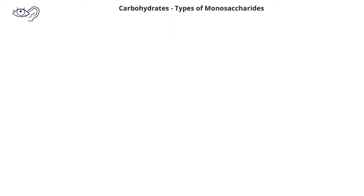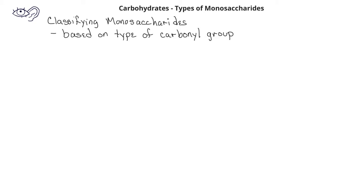For the remainder of this video, we'll focus on monosaccharides. When looking at different monosaccharides, as we did with glucose and fructose, we can distinguish monosaccharides based on the type of carbonyl group they have. For molecules like glucose, with an aldehyde, we would refer to these types of monosaccharides as an aldose. If we have a molecule like fructose, which has a ketone in the structure, this type of monosaccharide would be referred to as a ketose.